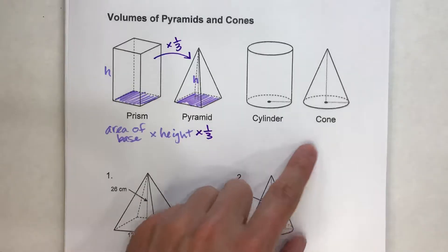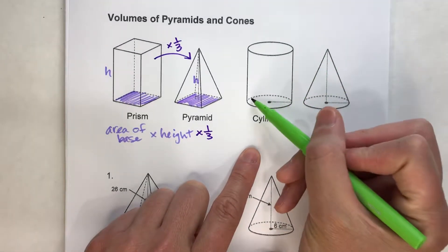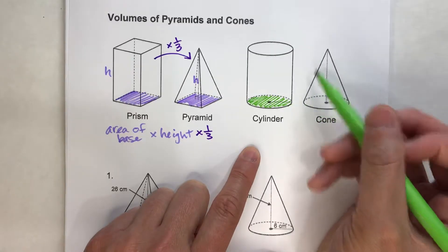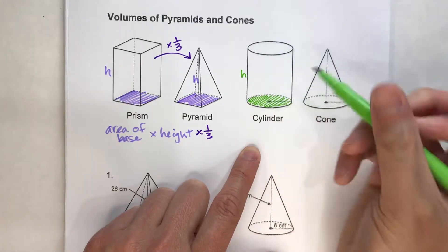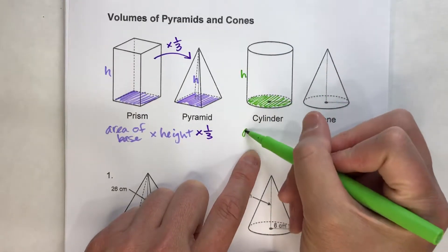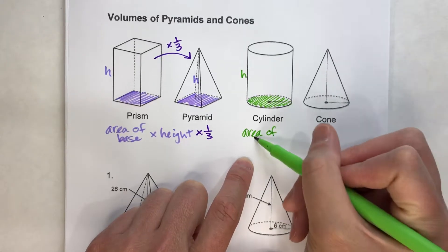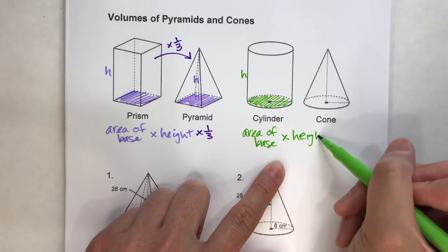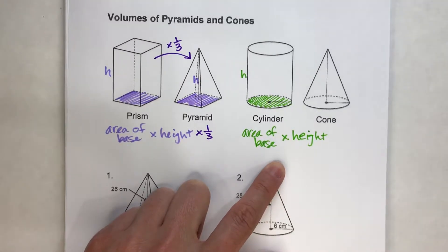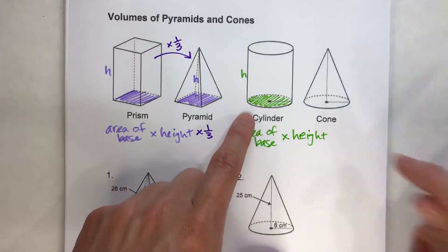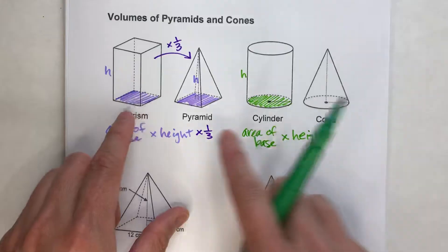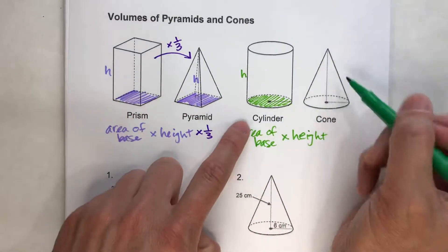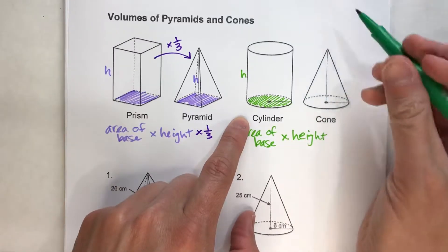Similarly, for cylinders and cones: to find the volume of a cylinder, we do just like before — area of the base multiplied by the height of the cylinder. The relationship between a cylinder and a cone is exactly the same as between a prism and a pyramid. It takes three cones to make one cylinder.